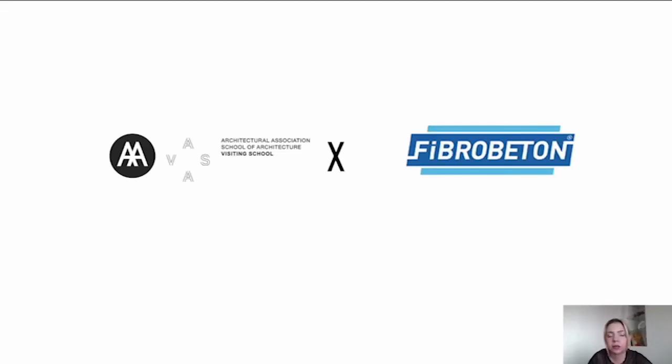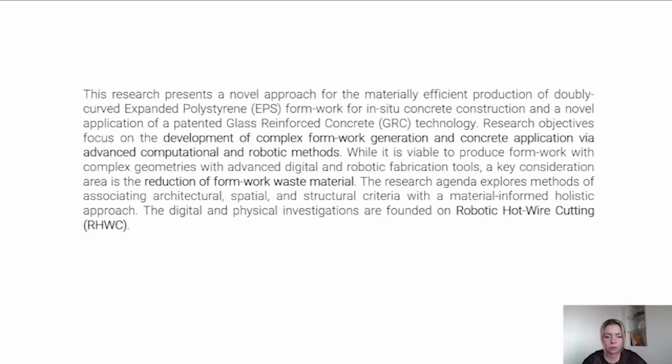And the second case study that I want to present is the AA Architectural Association visiting school in Istanbul that I have been directing for the past couple of years. And our collaboration with Fibrobeton - as I mentioned earlier, Fibrobeton is a company that focuses on GRC technology and shotcreting. So this research presents a novel approach for the materially efficient production of doubly curved EPS formwork for in-situ concrete construction and a novel GRC shotcrete technology application. The research objectives focus on the development of complex formwork generation and concrete application by advanced computational and robotic methods. And of course, while it is viable to produce formwork with complex geometries, a key consideration for us has been the reduction of formwork waste material.